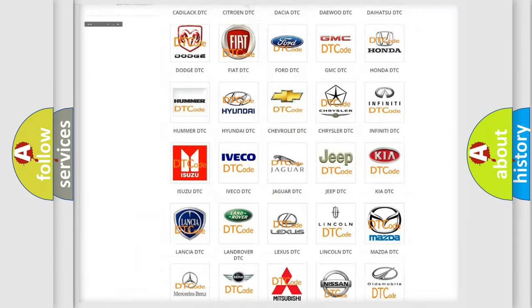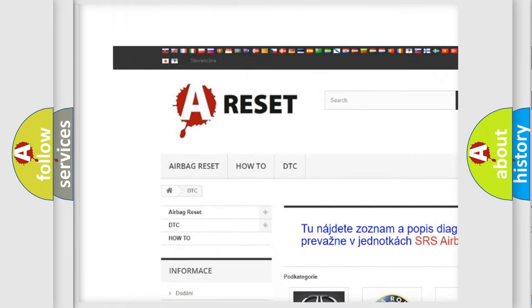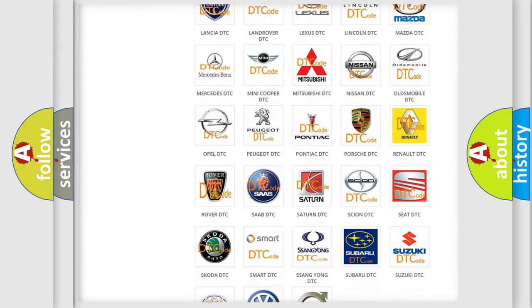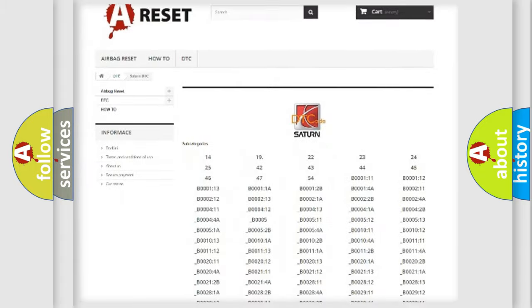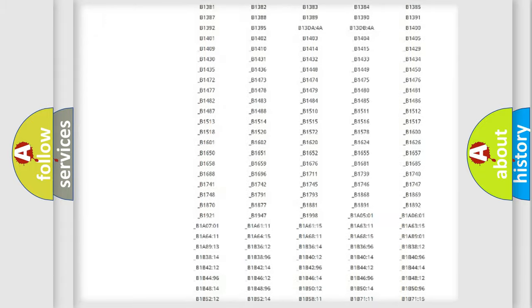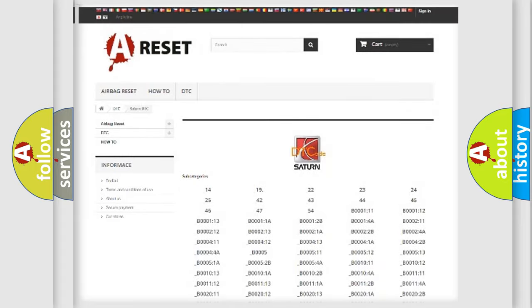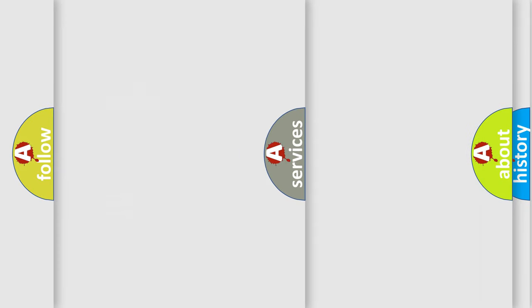Our website airbagreset.sk produces useful videos for you. You do not have to go through the OBD2 protocol anymore to know how to troubleshoot any car breakdown. You will find all the diagnostic codes that can be diagnosed in SEAT and vehicles, and many other useful things.